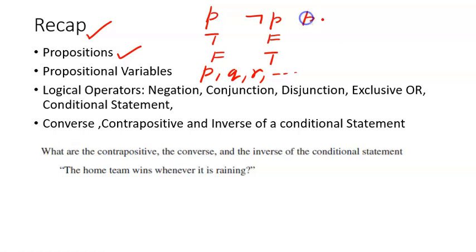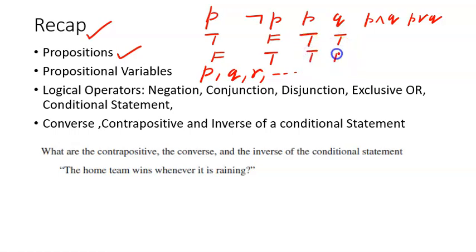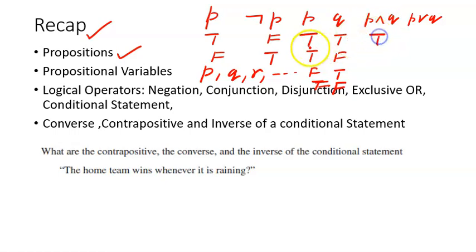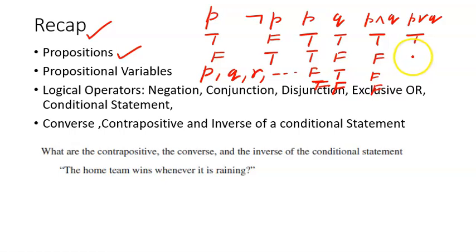We have also seen the truth tables for the conjunction and disjunction operators. p AND q is true only when both p and q are true, and false in all other cases. For p OR q, it is true when both are true, true and false gives true, false and true gives true, but when both are false it becomes false.